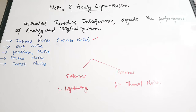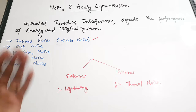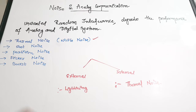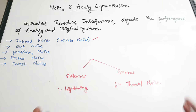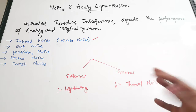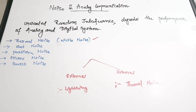Noise refers to unwanted random interferences which degrade the performance of analog or digital systems. There are two types of noise: external and internal. For example, lightning is an external noise, while thermal noise is an internal noise that happens within the system.